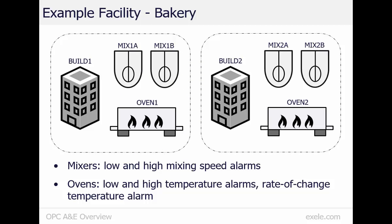Our example facility is a bakery. The bakery contains two buildings, each with two mixers and one oven. The buildings, mixers, and ovens have names which we will use to address them in OPC A&E. The mixers have alarms for low and high mixing speed. The ovens have alarms for low and high temperature, as well as rate of change alarms for temperature.